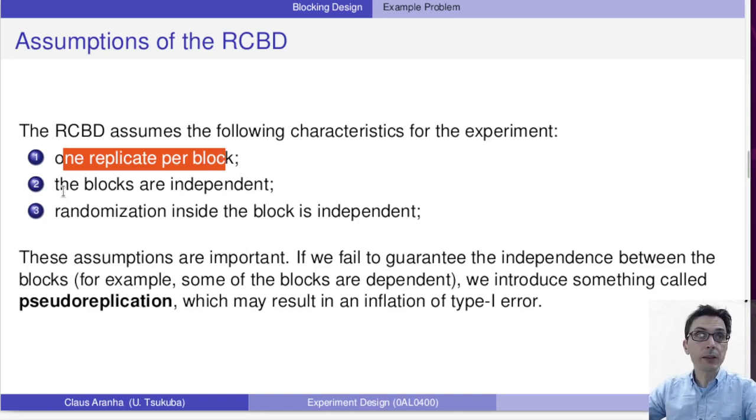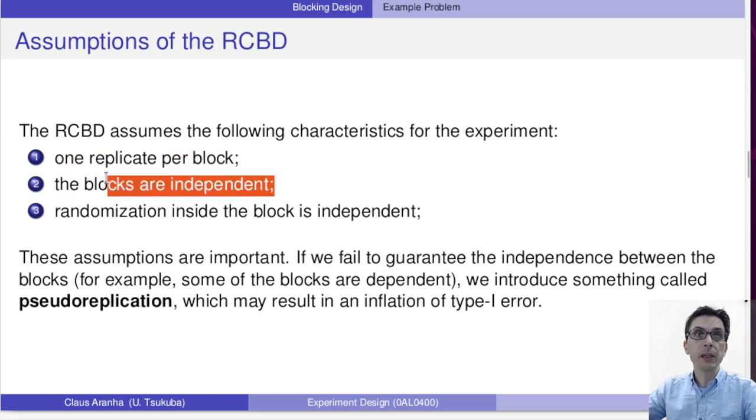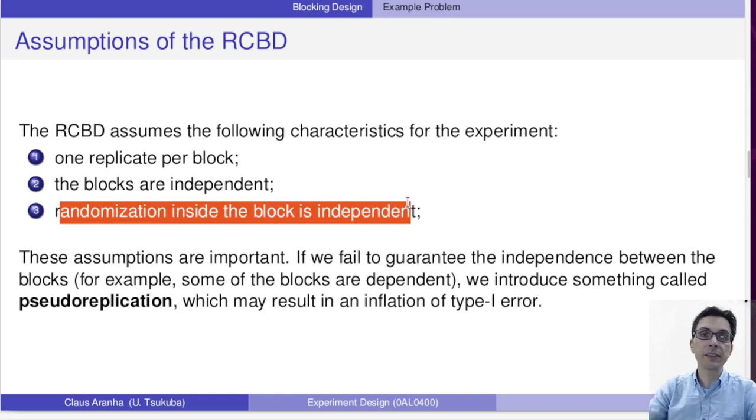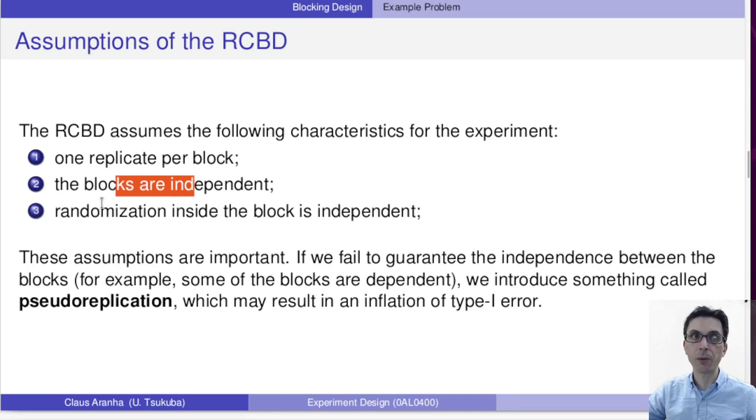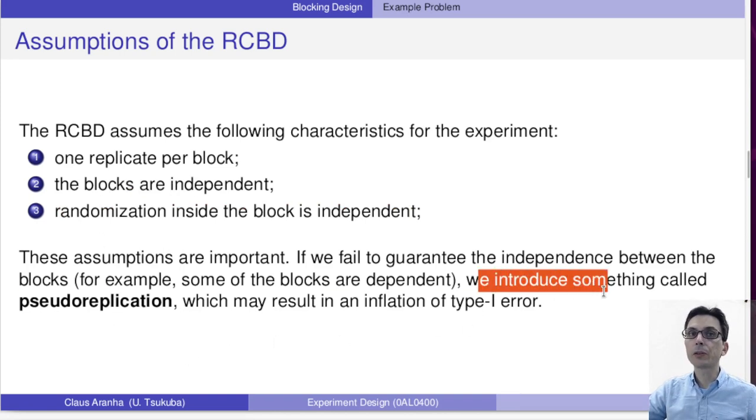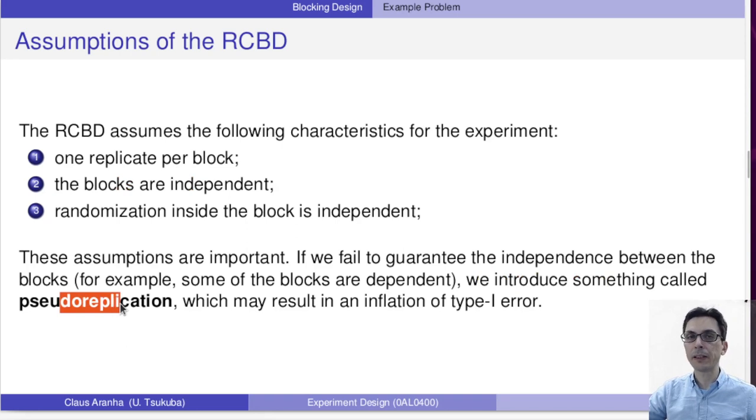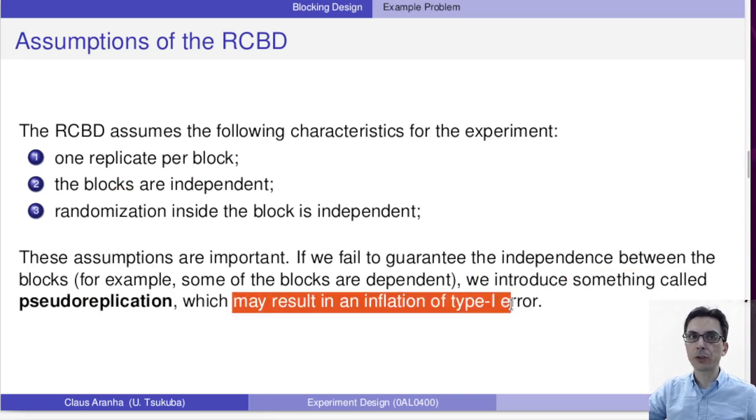That's very important: the blocks are independent. You have to guarantee that really each level in the block factor is independent from the others, it's different from the others. Also, randomization inside the blocks is independent. So inside the blocks, you have to guarantee there is no relationship between randomized runs. These assumptions are really important. If we fail to guarantee, for example, the independence between the blocks, then we introduce something called pseudo-replication which may result in inflation of type I error.